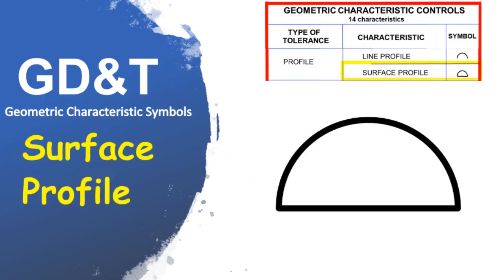Profile of a surface is a three-dimensional tolerance zone around a surface of a curve or shape — similar to line profile but applied across a complete surface. Profile of a surface can be used for advanced curved surfaces in multiple axes at once. Examples include casted parts, airplane wings, and other complex surfacing.